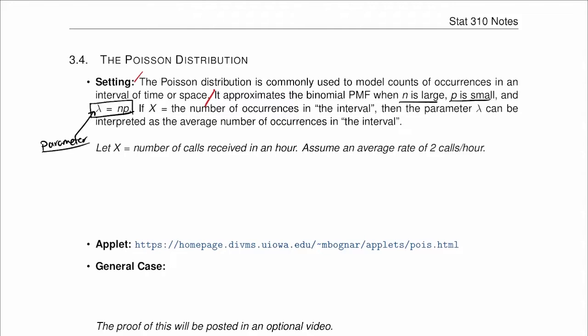If x is the random variable, that means it is the number of occurrences in the interval, then the parameter lambda can be interpreted as the average number of occurrences in the interval.